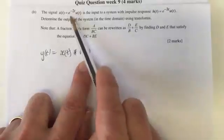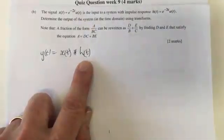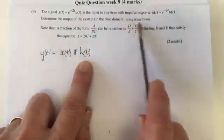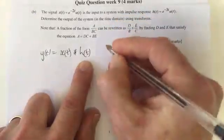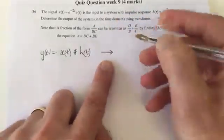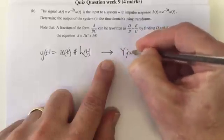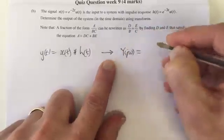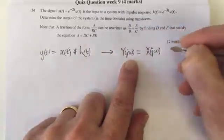Now, you can do this in the time domain with the definition of the convolution. And you've got this function here that needs to be convolved with this function here. You can certainly do that. But the question says and suggests that you use transforms, or tells you to use transforms. And this is going to make it easier. And we know that one of the properties of the Fourier transform is that the convolution in the time domain is equivalent to multiplication in the frequency domain.